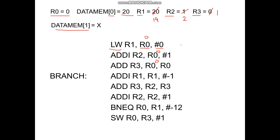After this we are going to check whether registers R0 and R1 are equal. R1 is 19 but R0 is 0. This is a branch not equal instruction. Since both are not equal, we are going to jump 12 bytes behind. Since each instruction is 4 bytes, this instruction is minus 4, this is minus 8, and this is minus 12. So for each iteration the branch addresses this.